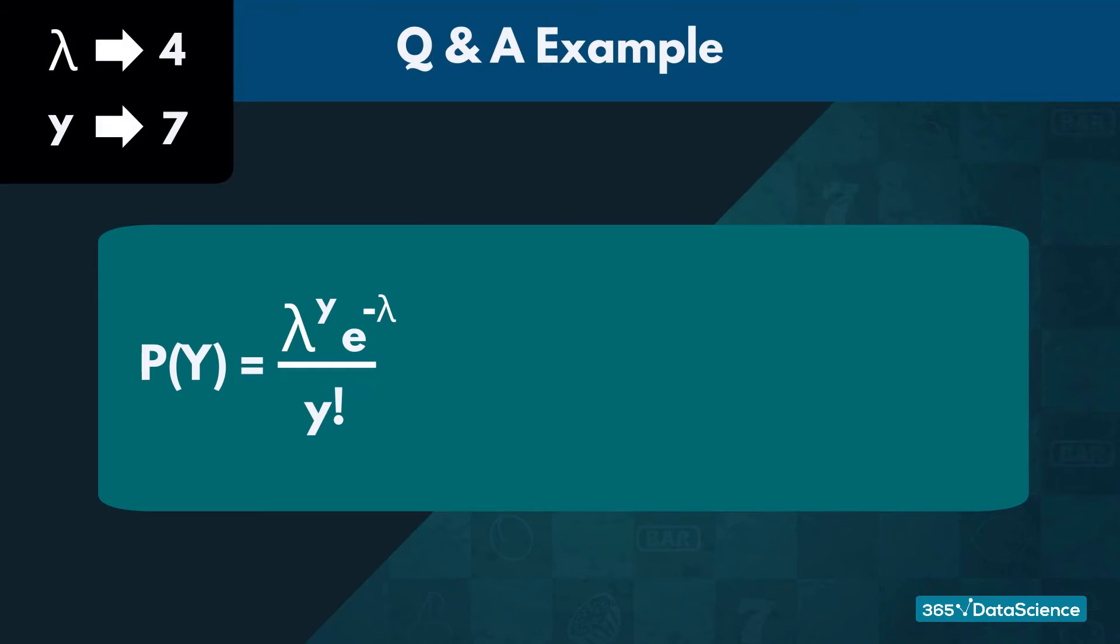Going back to our example, the probability of receiving 7 questions is equal to 4 raised to the 7th degree, multiplied by E, raised to the negative 4, over 7 factorial.